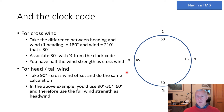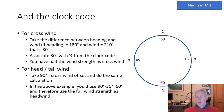For a head or tailwind, do the same calculation but use 90 minus the crosswind offset. So if you had been using 30 degrees for your crosswind component, for the headwind component you'd use 60 degrees and apply the full wind speed as the headwind or tailwind component.